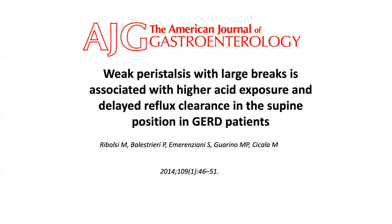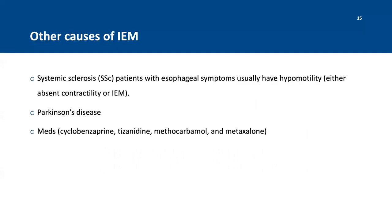Poor clearance leads to more dysphagia, and more GERD causes the esophagus not to work well, further impeding clearance as the disease progresses. Other causes of ineffective esophageal motility include rheumatological problems such as systemic sclerosis, Parkinson's disease, or medications that can reduce smooth muscle contraction of the esophagus.